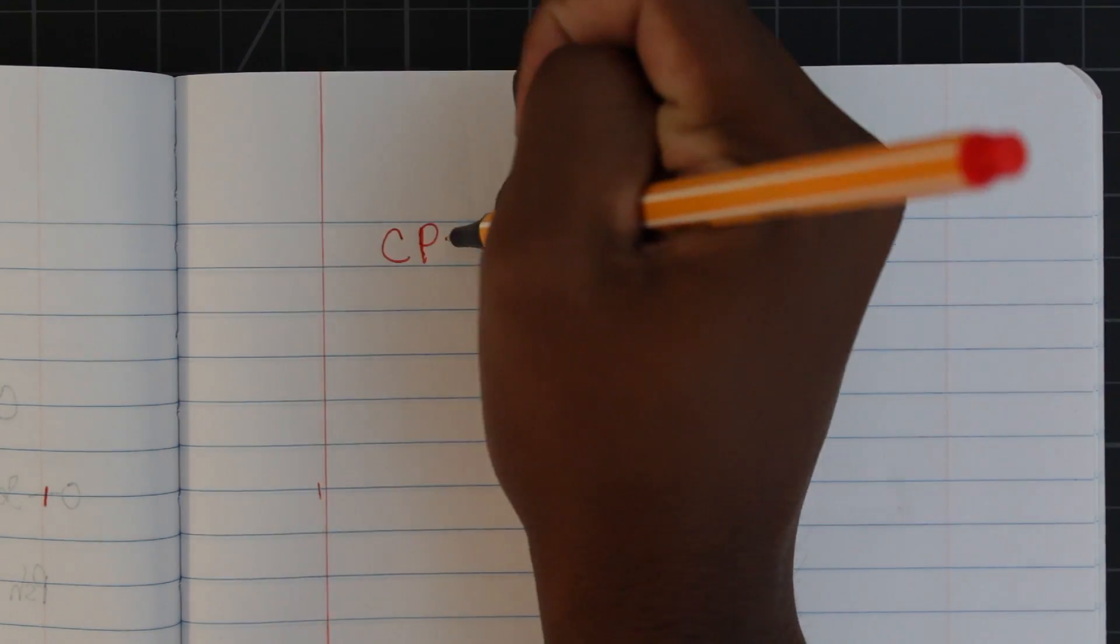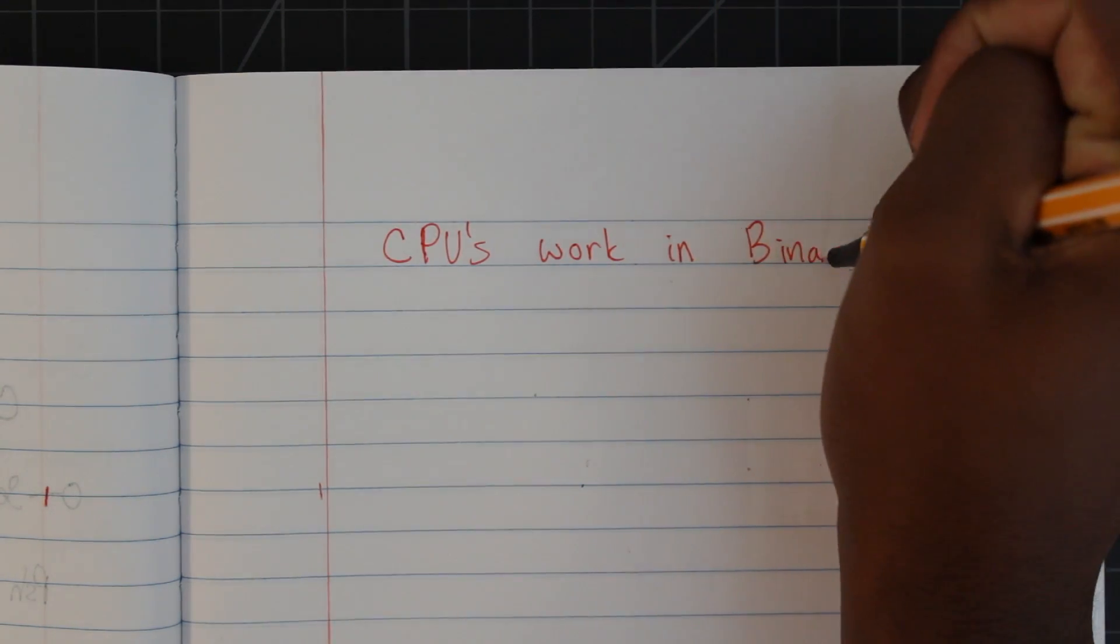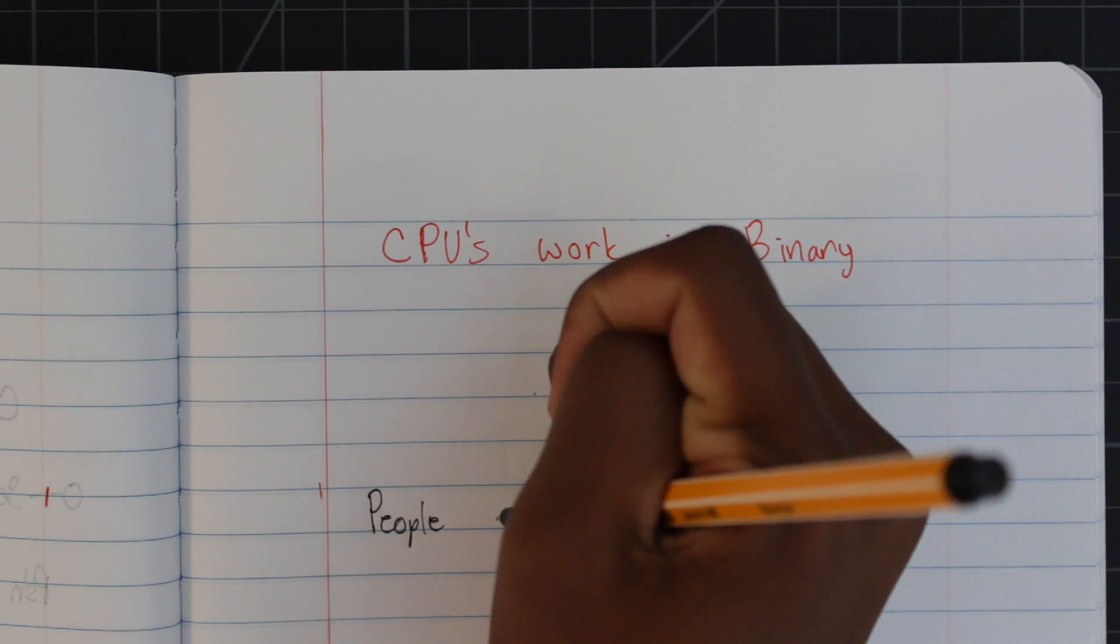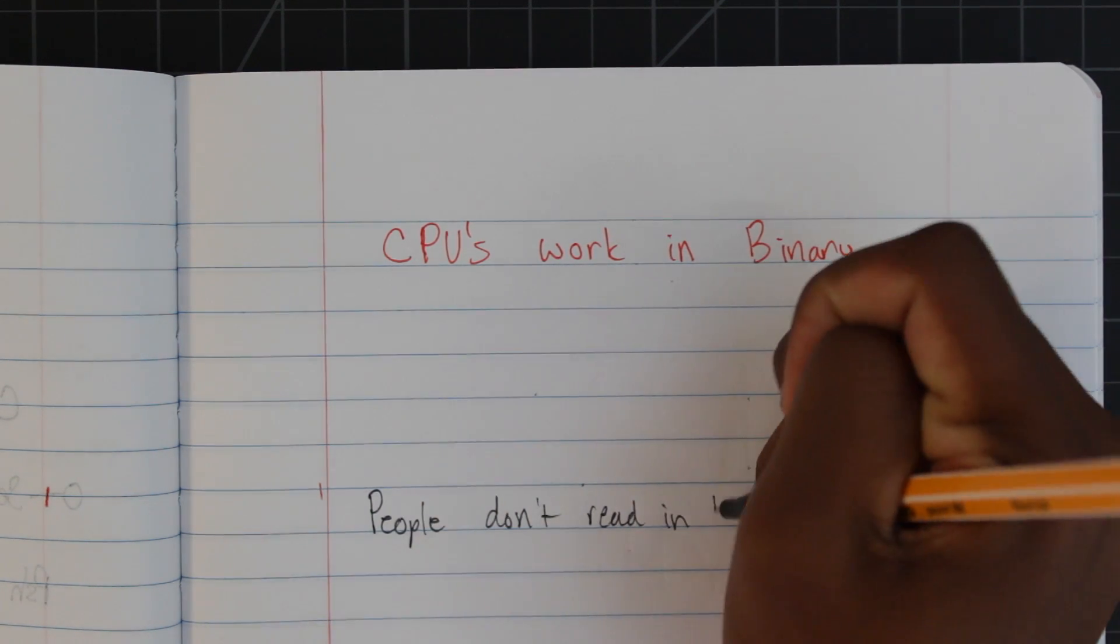I'm sure we all know this by now, but just to make sure, CPUs work in binary. Now, we people don't use the binary system for numbers, we use the decimal system.